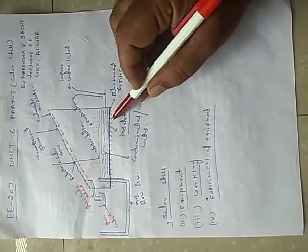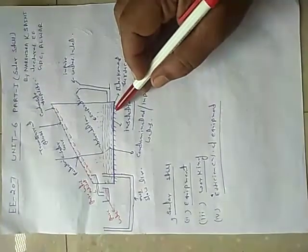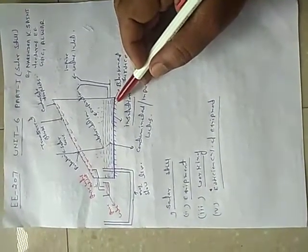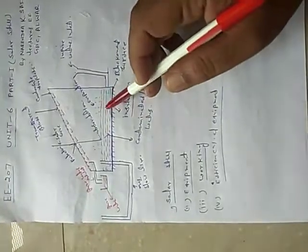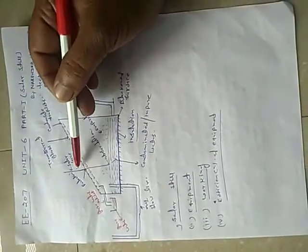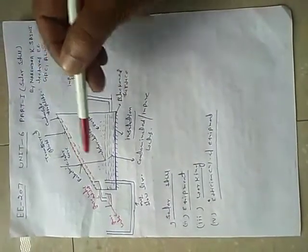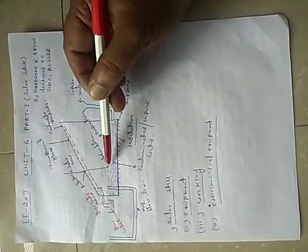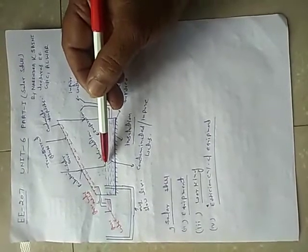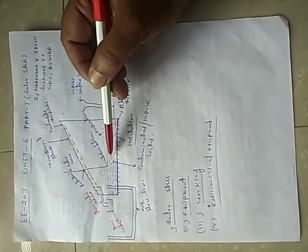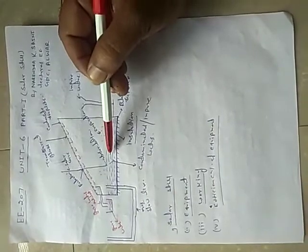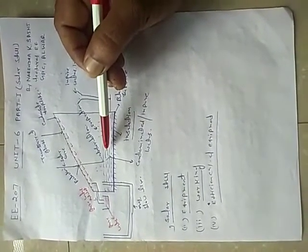This is the insulated surface space so that the temperature is not lost. Now look at this impure water. The sun's rays pass through the transparent sheet and are reflected and absorbed by the impure water, which increases the temperature.